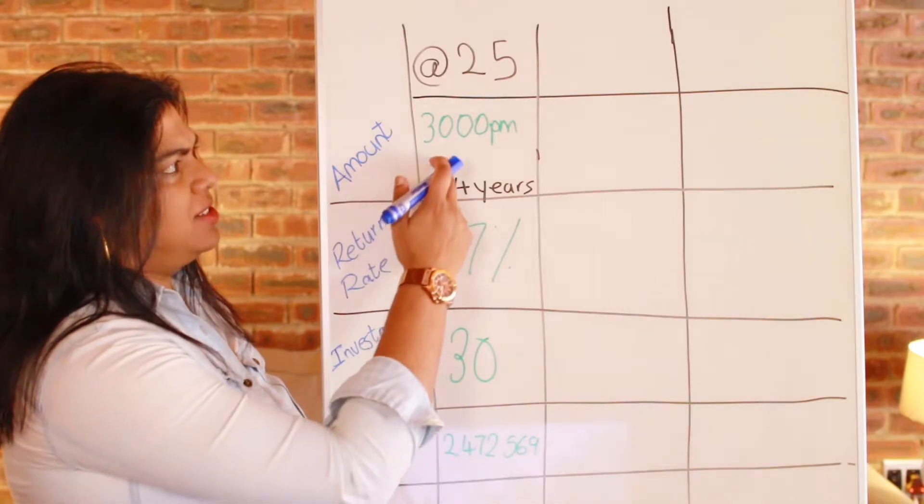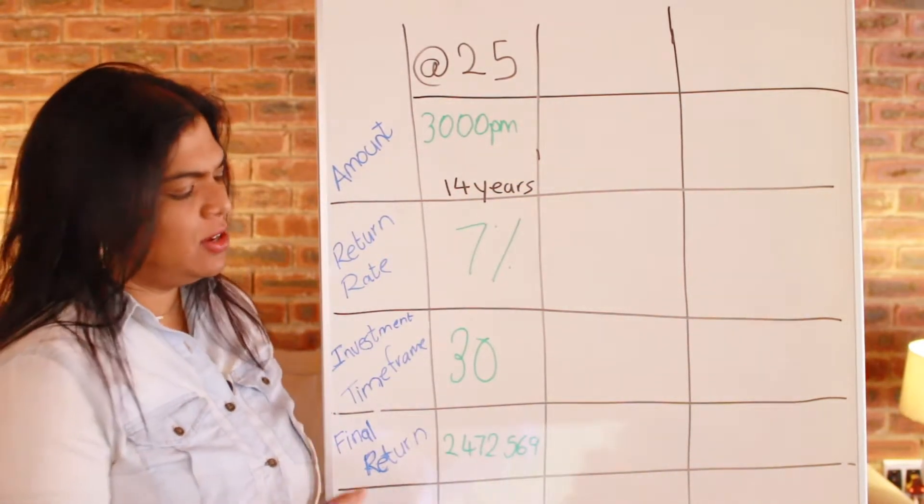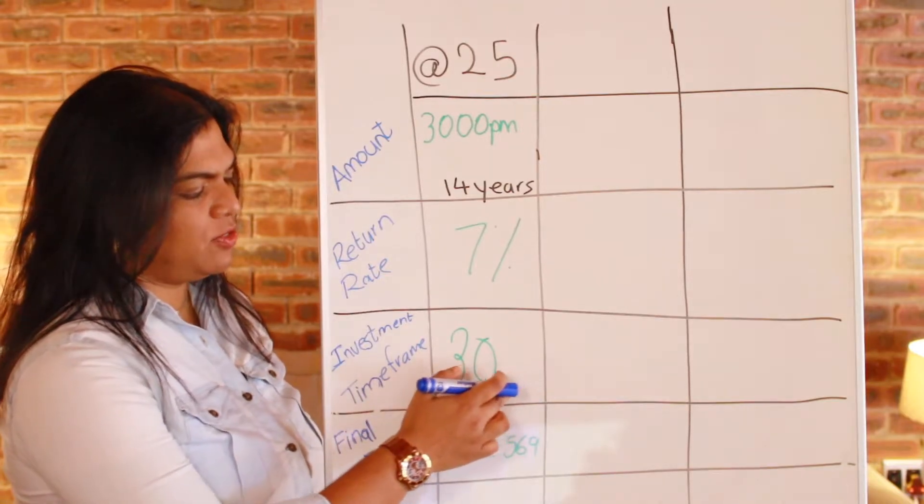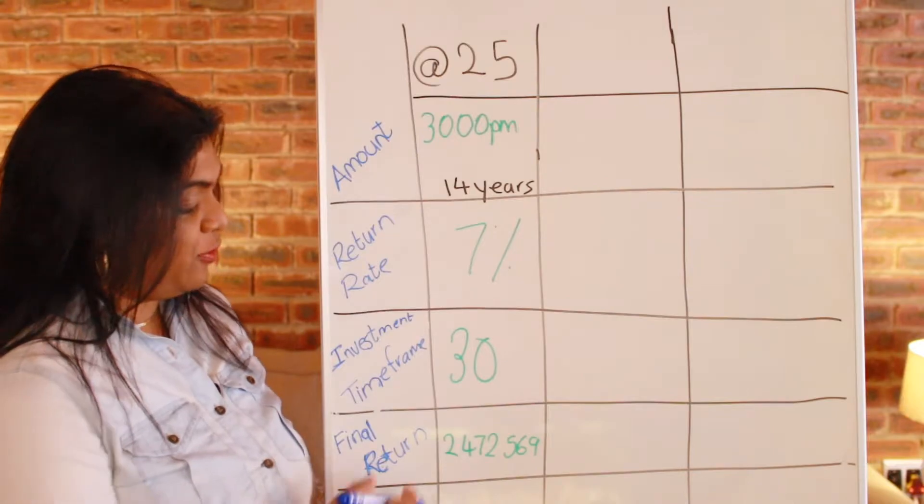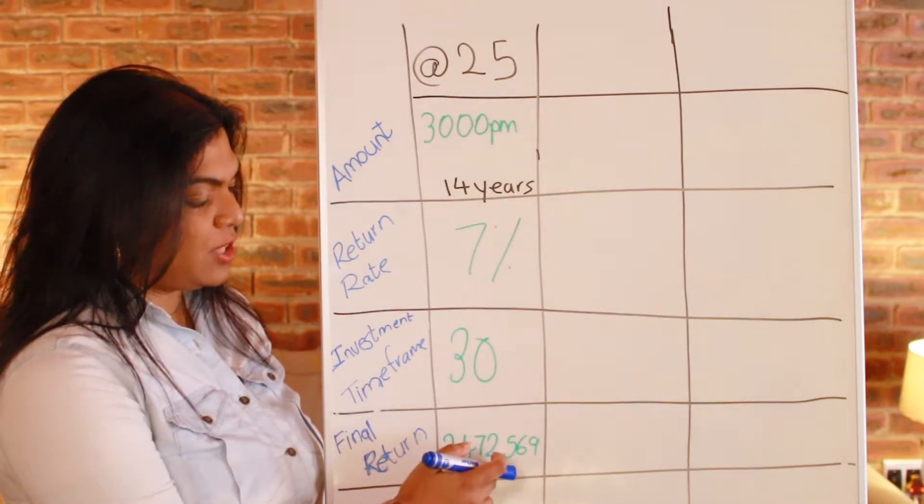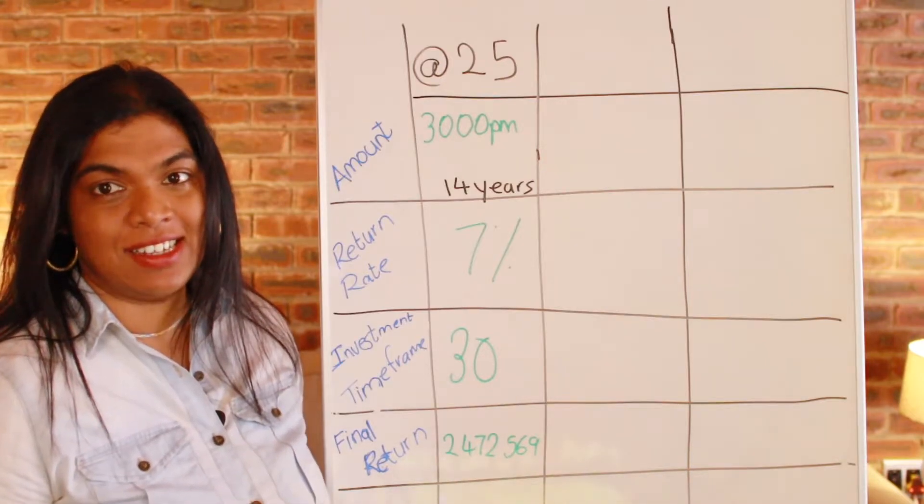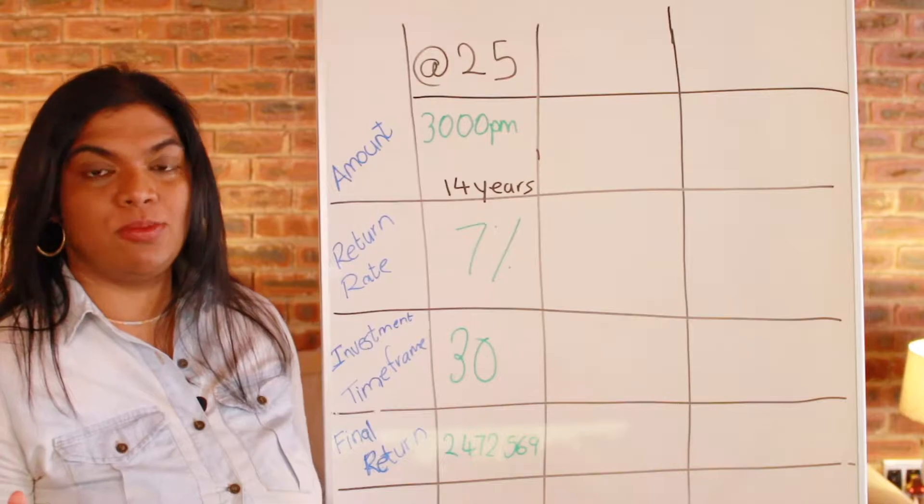And we leave that funds, that R500,000 that you've invested over 14 years, we leave it in the investment for a period of 30 years. So see it as your retirement savings. The final return that you would get is 2,472,569 rands. And because it's in a tax-free platform, zero taxes upon withdrawal.